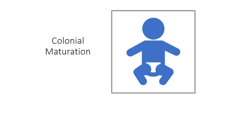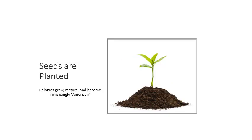This is our last lecture for the colonization unit. We looked at the north, the south, and the middle colonies. I want to see how these colonies grew and how they affected us as Americans going forward — how their values, morals, and ideas spread into the future. The seeds were planted in these colonies that grew and matured and became increasingly American, setting the values, ideas, and doctrines that would become part of our American society.